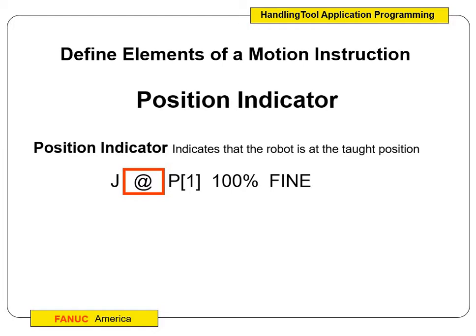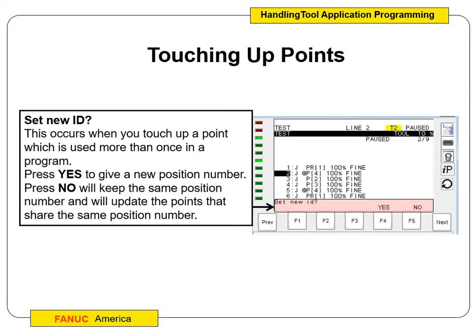The @ indicator shows where the robot physically is — the position it's at when it's at point one or point five. It always appears at your current top position, and when you step through your program it will change. As the robot moves between points, the @ sign will not appear because it's between points. The @ sign will only be there when it reaches the exact coordinate of that position.